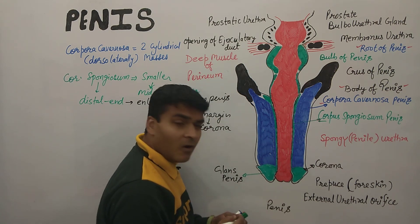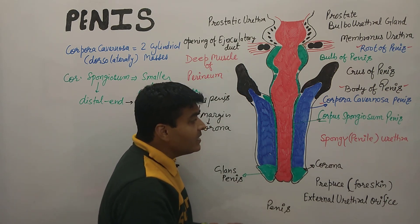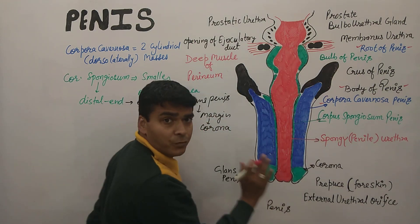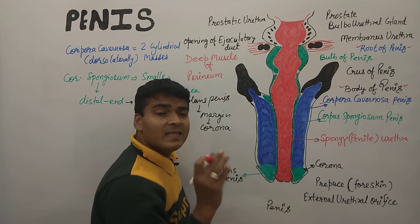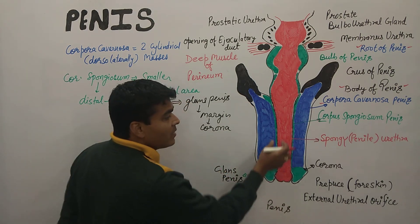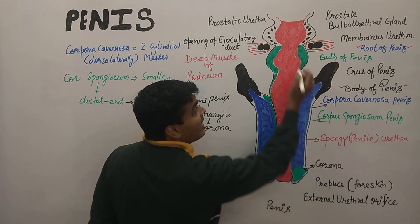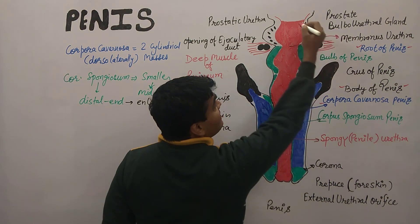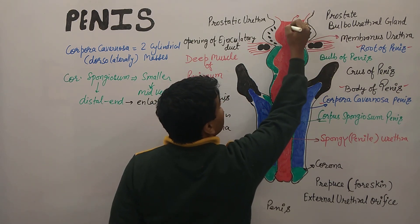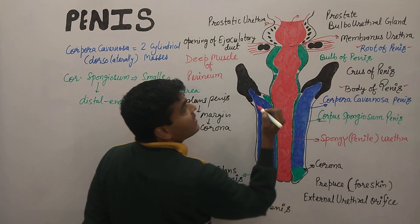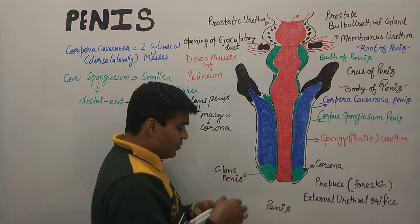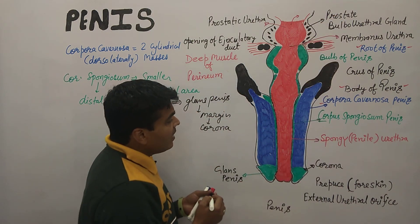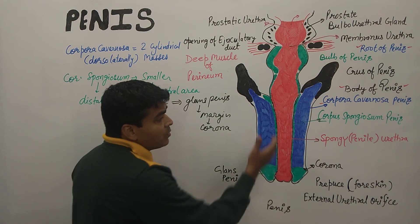The whole red color structure is the urethra, which has three parts: the last portion is the spongy penile urethra; the middle area is the membranous urethra; and the upper area is the prostatic urethra. At the prostatic urethra, we find the prostatic glands.